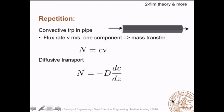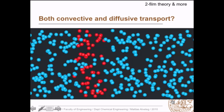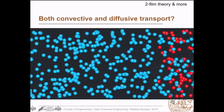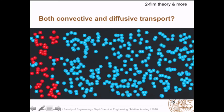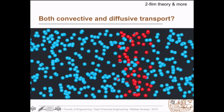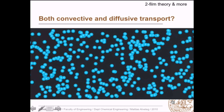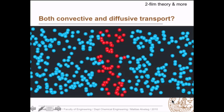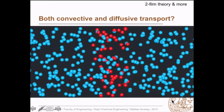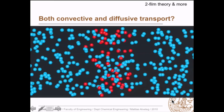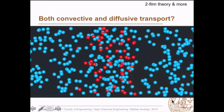What about the situation when we have both convective transport and diffusive transport? We will assume binary systems. If we have convective and diffusive transport with a blue liquid flowing through a pipe and a pulse of red liquid, the pulse goes from left to right. A way to describe this is to let the camera move along with the average velocity of the molecules — then on average the molecules are standing still and the red molecules slowly disperse into the blue molecules.